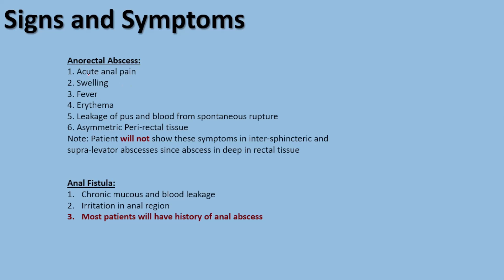Anal abscess is an acute form of the disease. The patient will experience anal pain, swelling, fever, erythema, and leakage of pus. Blood leakage is also possible due to spontaneous rupture, and the patient may have asymmetric perirectal tissue. However, if the patient has inter-sphincteric or supra-levator abscess, these symptoms might be absent. In anal fistula, being a chronic condition, the patient presents with mucus and blood leakage from the anal region, along with irritation, and most patients will have a history of anal abscess.